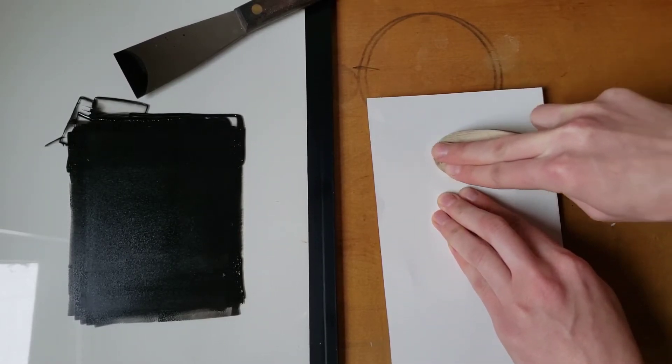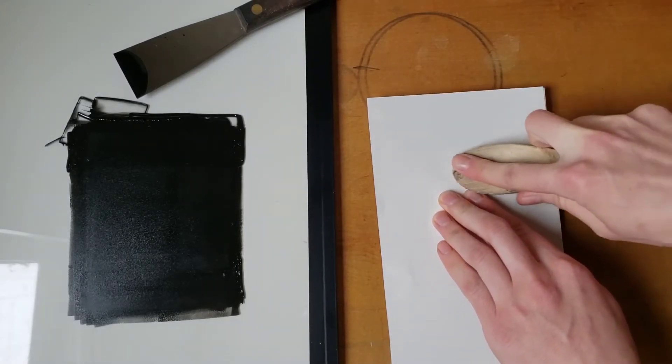While printing, use the other hand to exert constant firm pressure to the back of the paper to prevent it from slipping.